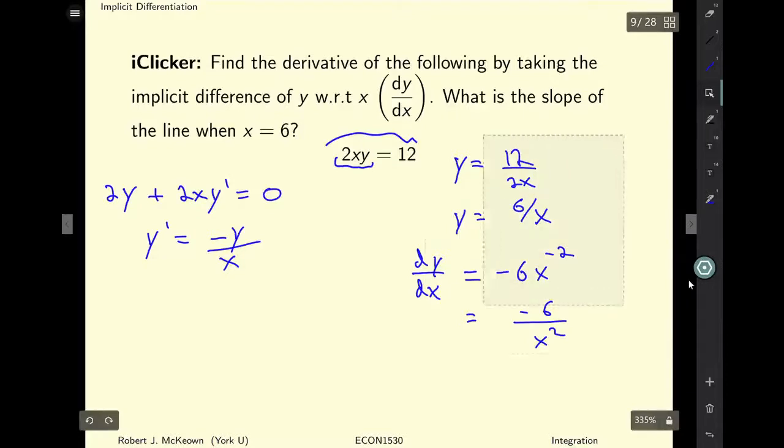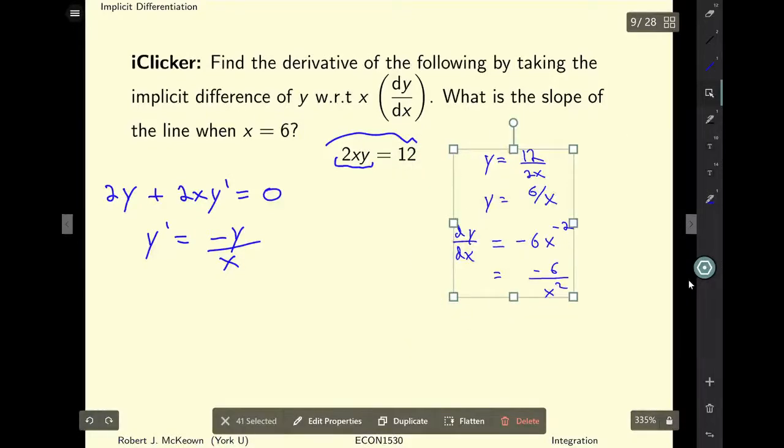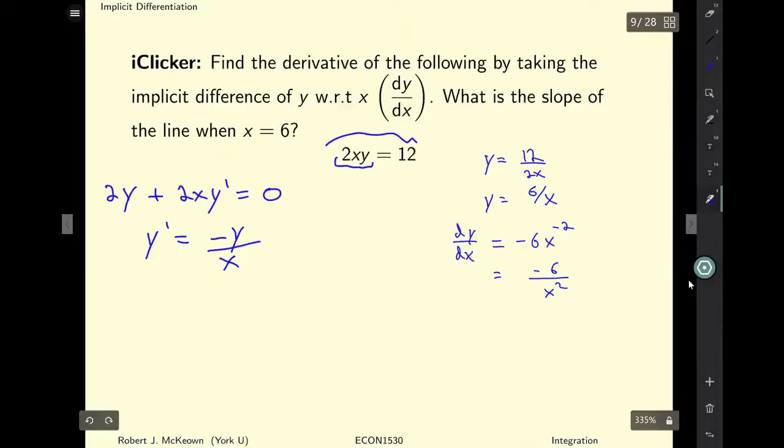Now the next part of the question is asking us to find the slope when x is equal to 6. So if I want to use the implicit differential, I'm also going to need to find a value for negative y. And so 2 times 6 times y equals 12. Well, this expression is true if and only if y is equal to 1. And so y prime is going to be equal to negative 1 over 6 because x is equal to 6.